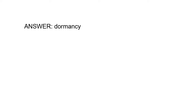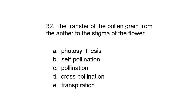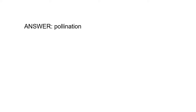Question 32. The transfer of the pollen grain from the anther to the stigma of the flower. A. Photosynthesis, B. Self-pollination, C. Pollination, D. Cross-pollination, or E. Transpiration. The answer is Pollination.